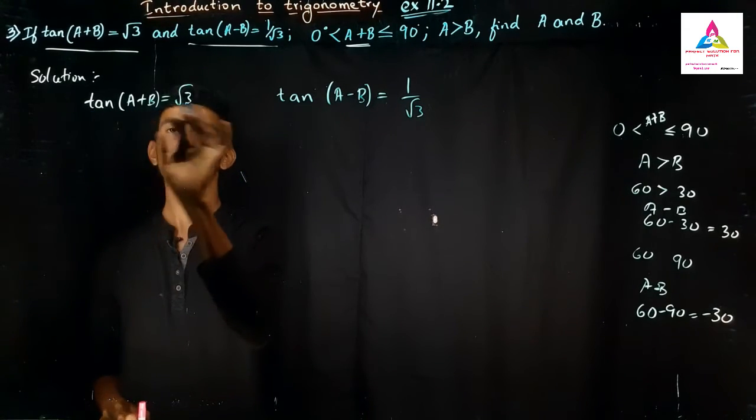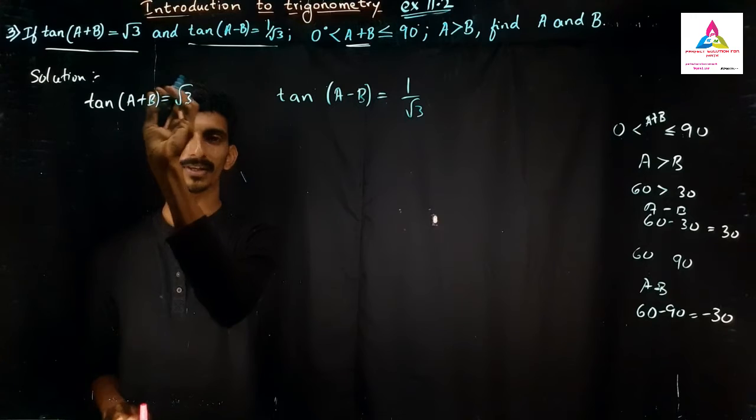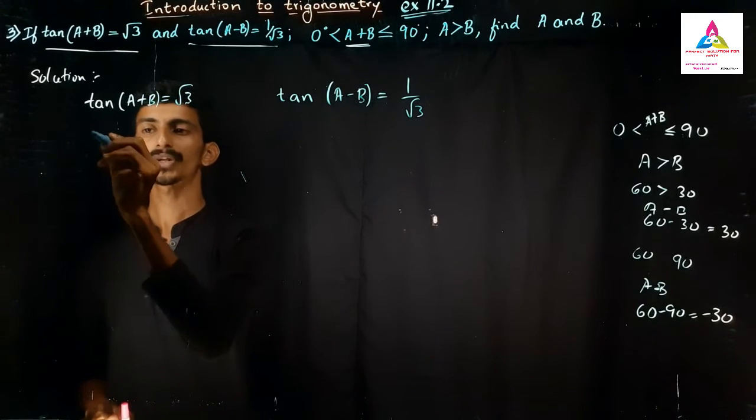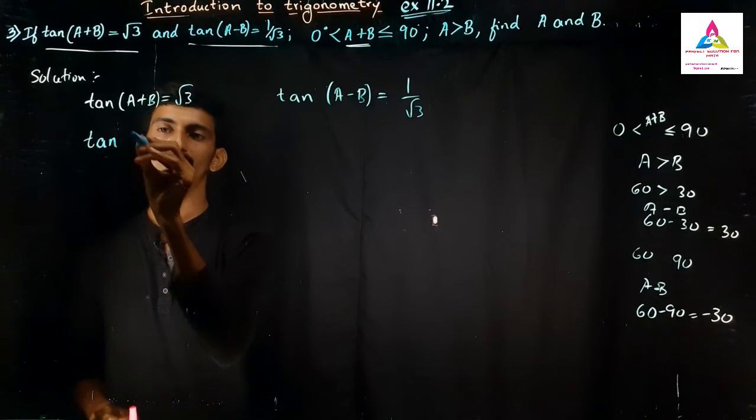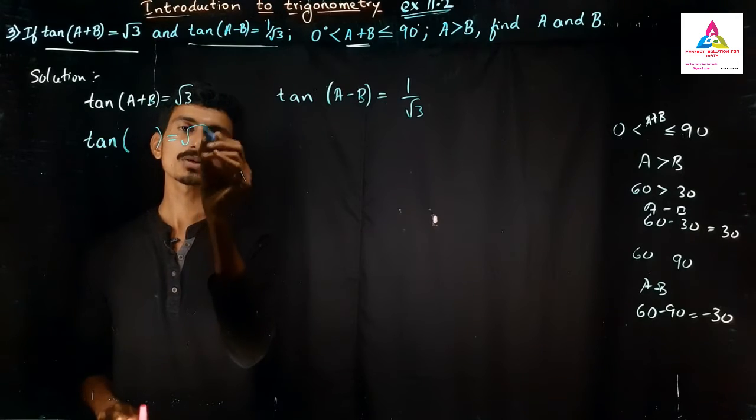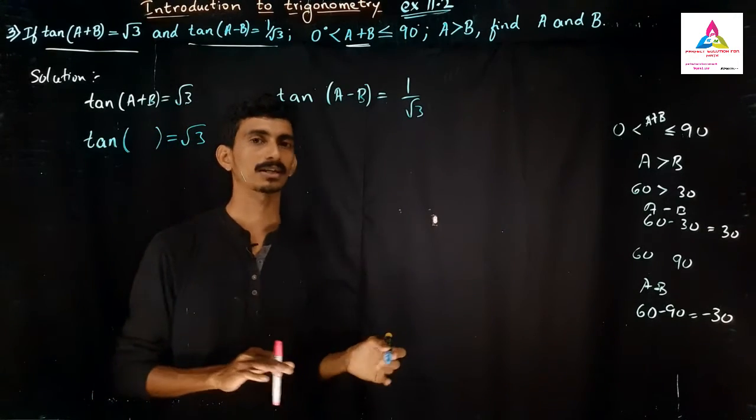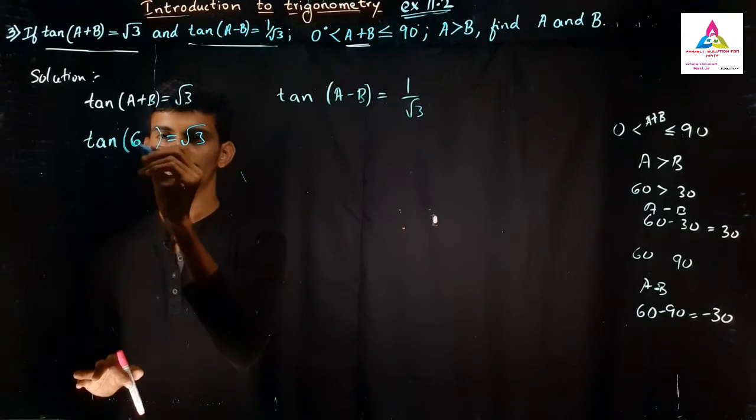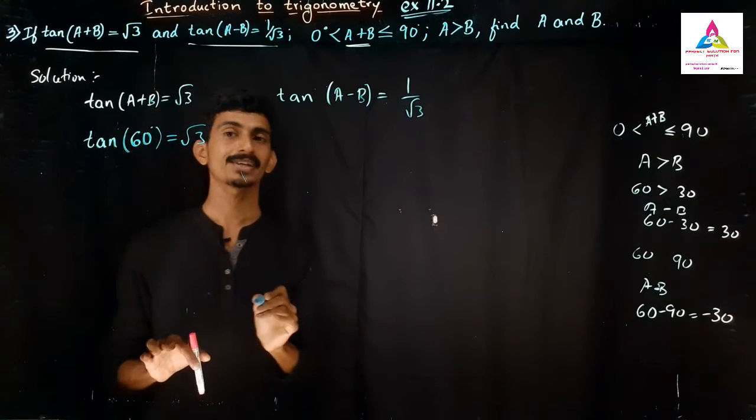So tan(A+B). Don't bother about A+B. Consider as one angle. So tan which angle value will become the root 3 value? If you will see the table correctly, it is 60 degrees. The tan 60 degrees is root 3 value.